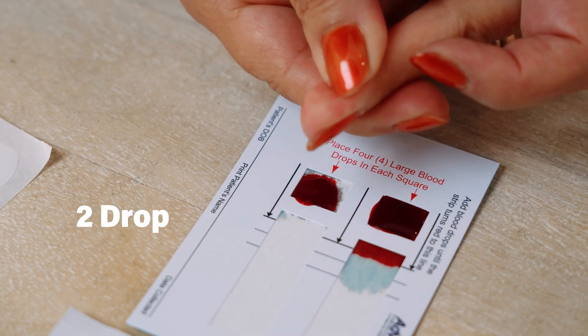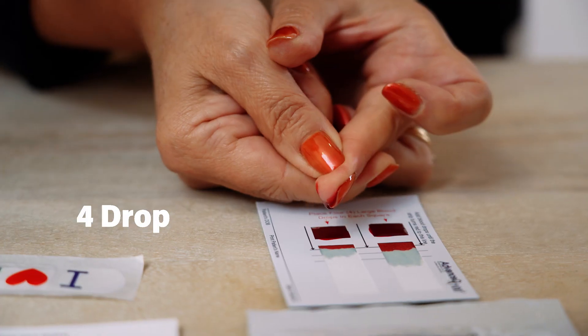Next, repeat the above steps if necessary, using a new lancet and place four to seven drops of blood on the lower left square.